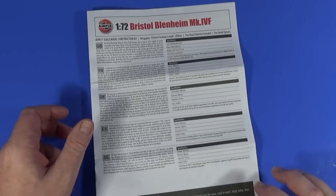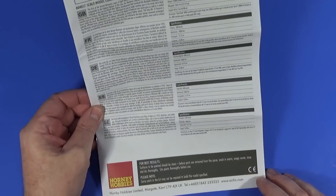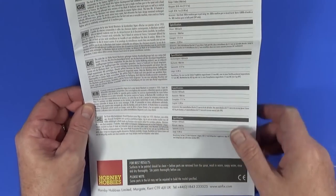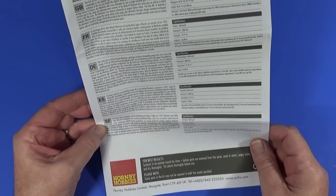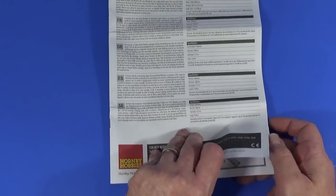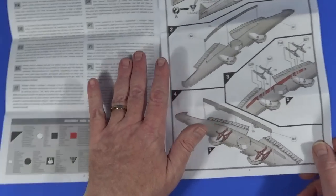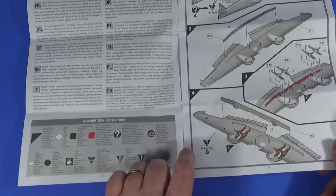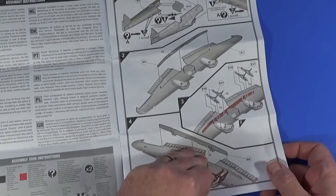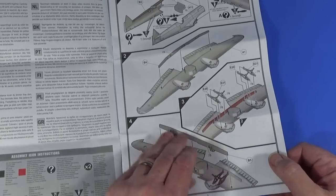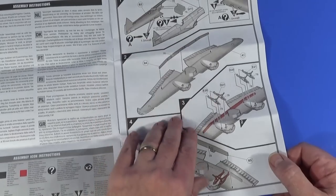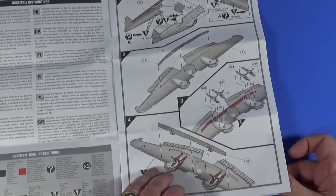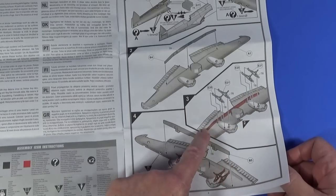Instruction sheet, pretty typically Airfix. Some basic information and some basic history here in English, French, German, Spanish, and Swedish. Some basic assembly instructions, a decoding for the various icons that they use, and then the main instructions themselves.